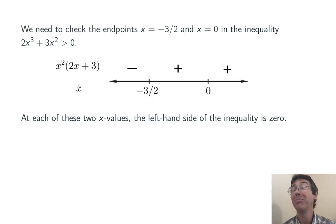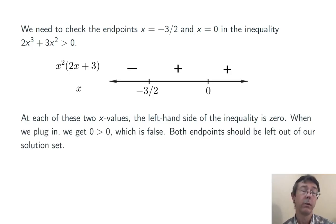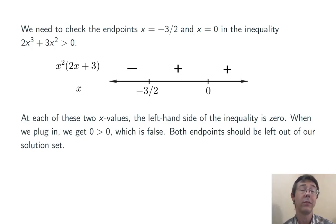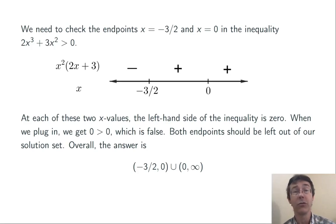Let's plug in x equals negative three halves and x equals zero into that inequality and see if it's true or false. In each case, when I plug in, the left-hand side is going to be zero, so I'm getting zero greater than zero — and that's not true. Zero is not greater than zero, so I have to leave out both endpoints from my solution set. Overall, I'm getting negative three halves comma zero union zero comma infinity, with parentheses at the end of each interval indicating that the endpoints are being omitted.